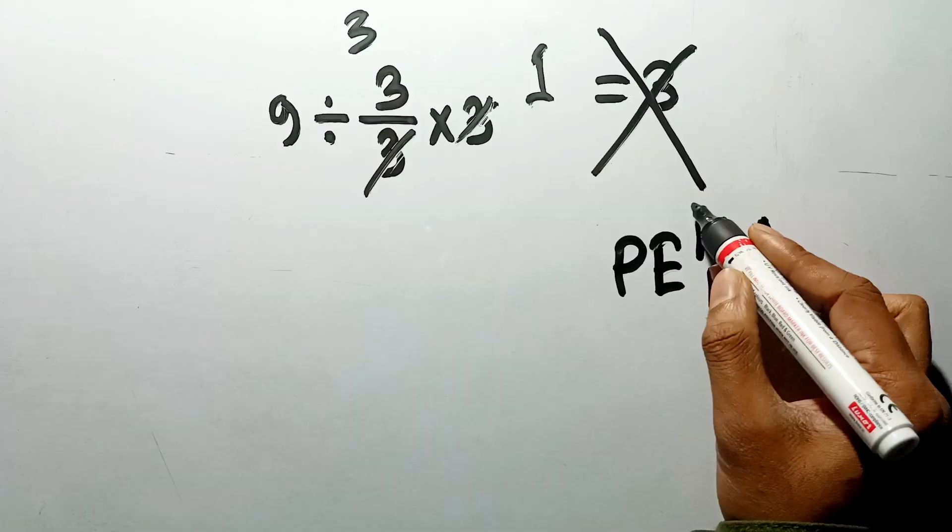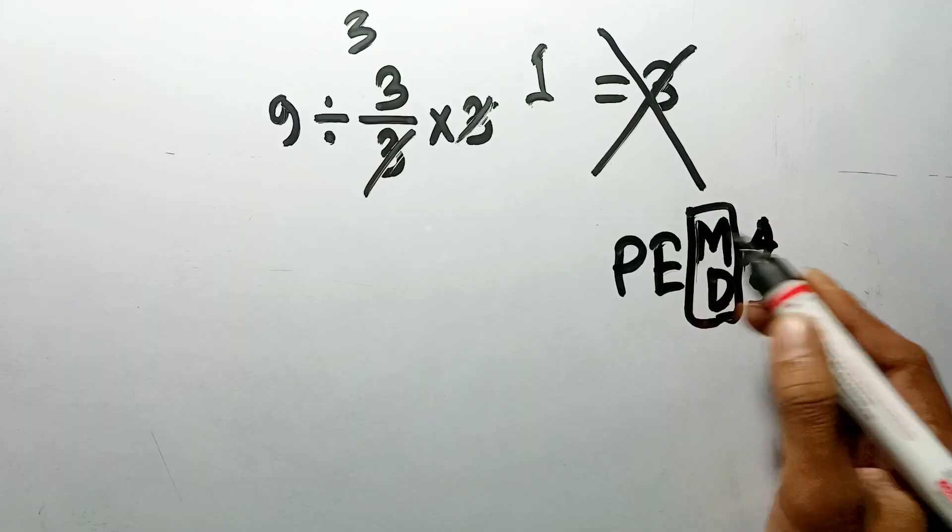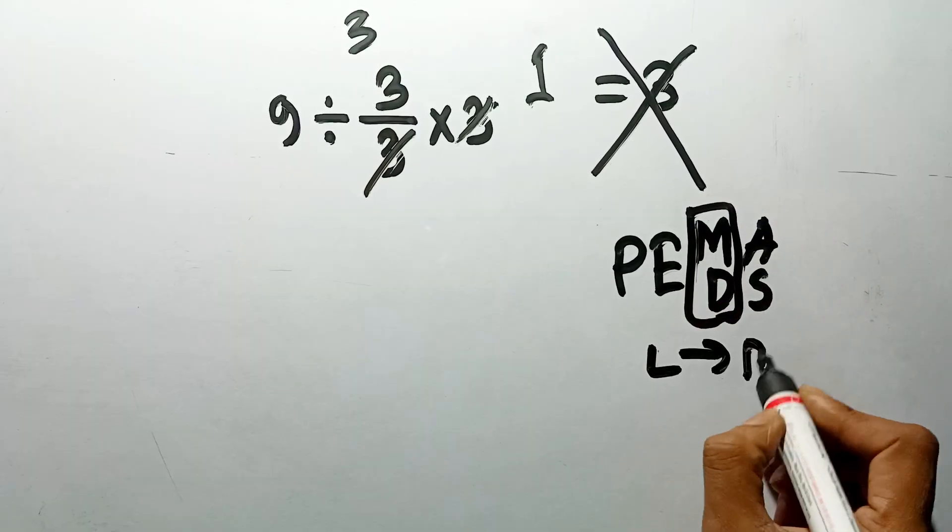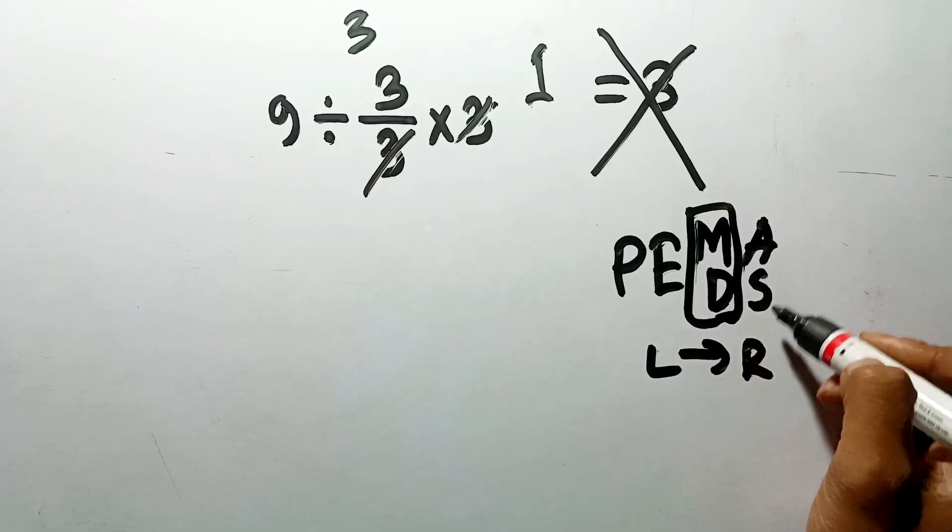Remember that multiplication and division have equal priority, and we have to work from left to right, and the same applies to addition and subtraction.